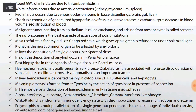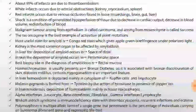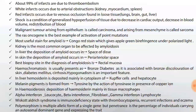About 99% of infarcts are due to thromboembolism. White infarcts occur due to arterial obstruction — in kidney, heart and spleen. Red infarcts occur due to venous occlusion, found in loose tissues like lung, brain, gut and liver. Just remember: red infarcts occur in venous occlusion in loose tissues; white infarcts are due to arterial obstruction in kidney, myocardium and spleen. Shock is a condition of generalized hypoperfusion of tissue due to decrease in cardiac output, decrease in blood volume and redistribution of blood.